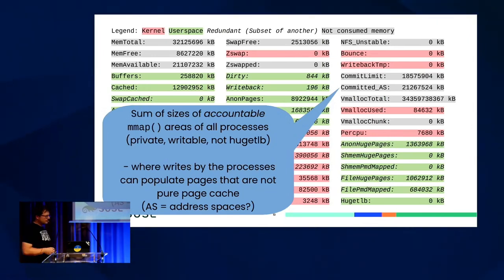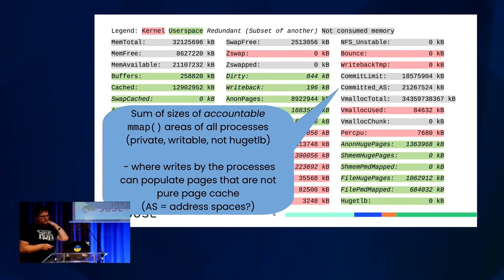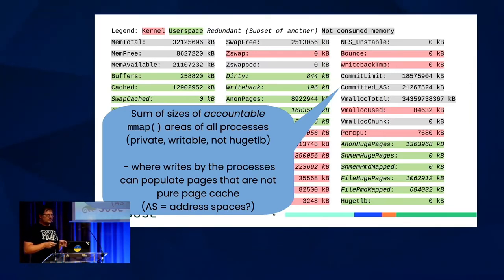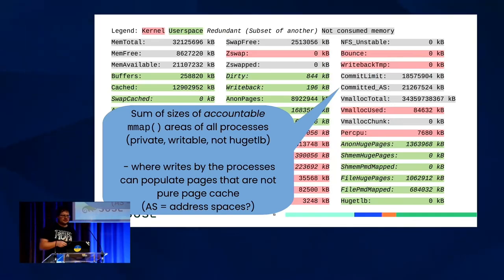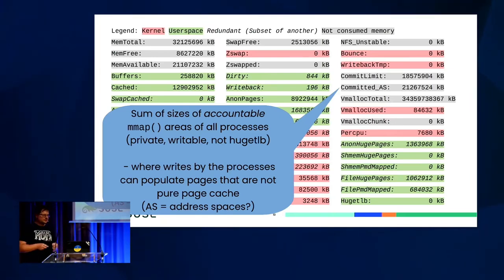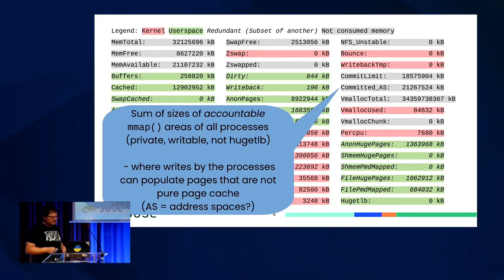There's an interesting field called CommittedAS, where I assume AS means address spaces — it's the size of the virtual memory areas of all processes, but only a subset that can contribute to memory usage. Shared ones are not accounted, but private writable ones are. So basically any areas where a user space process can fault in memory that's private to it. We'll see examples of that later.